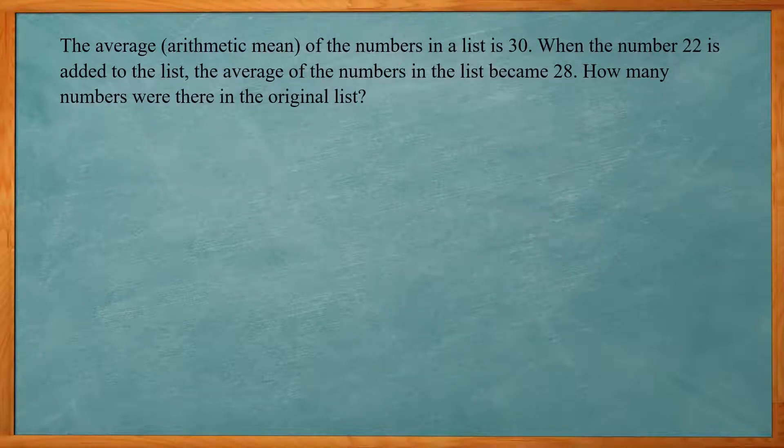This one says the average or arithmetic mean of the numbers in a list is 30. When the number 22 is added to the list, the average of the numbers in a list becomes 28. How many numbers were there in the original list? So again, we look at our summation of the x values divided by n. So our unknown is how many were in the original list. So we're going to call that x.